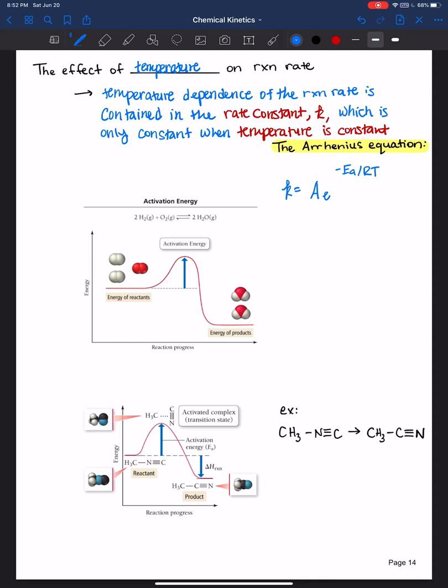Ea is the activation energy, or also called the activation barrier, and its units is usually in joules per mole or kilojoules per mole, and you can see it right here. So it's the energy required here to get over this little hill. And we'll discuss that in a little bit more detail in a second.